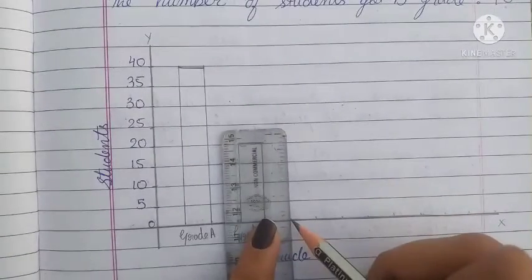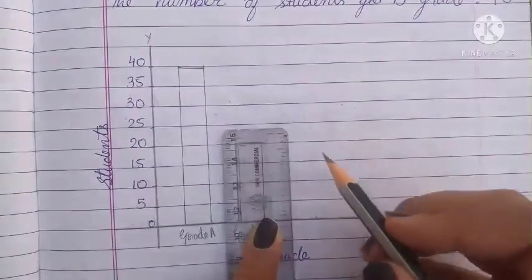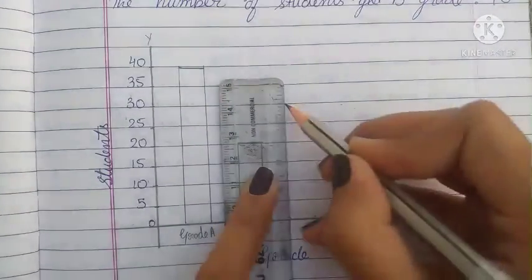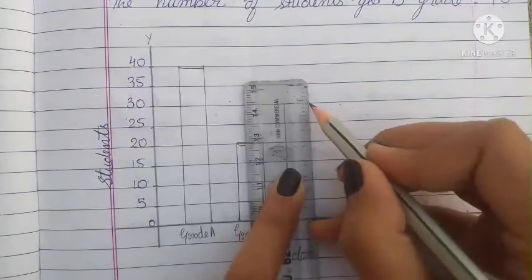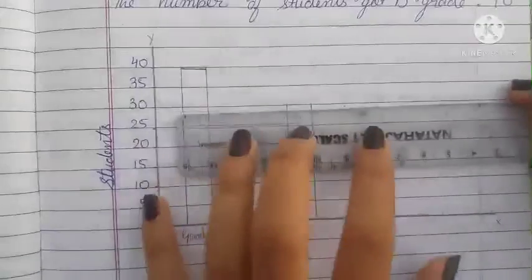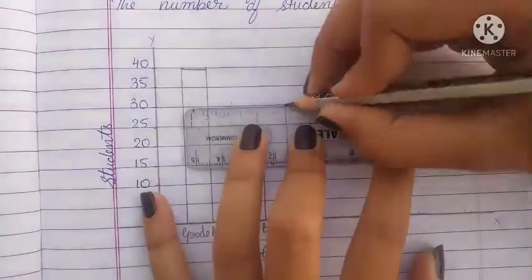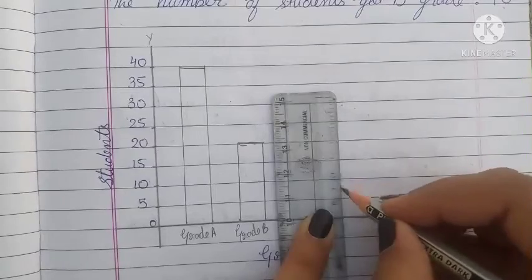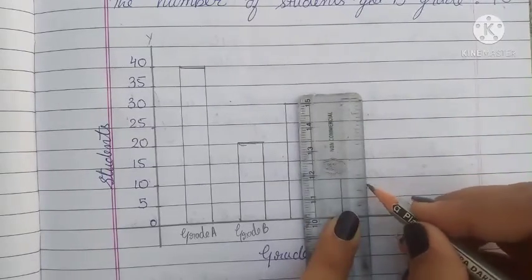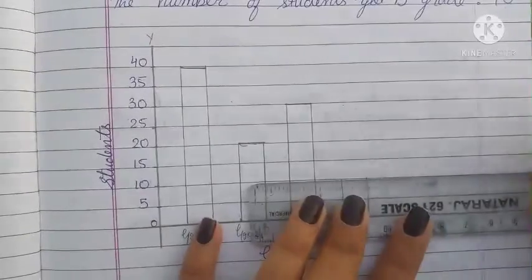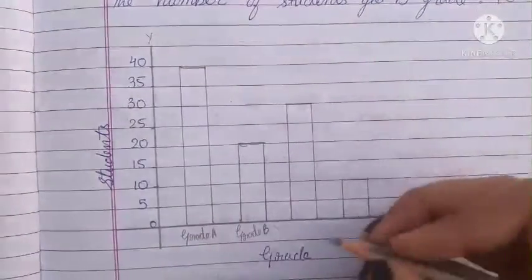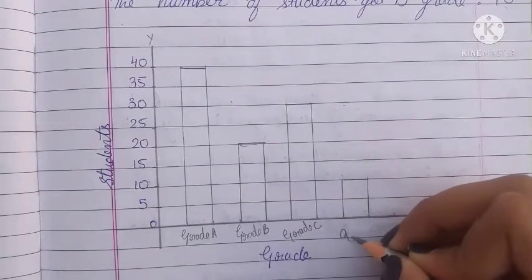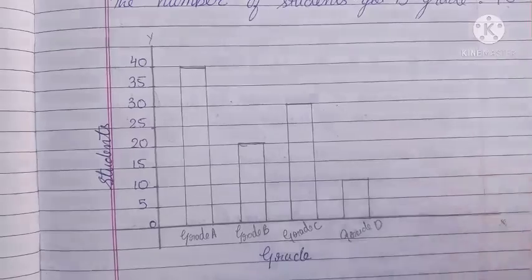Next is grade C. Grade C — how many students? 30 students. We will draw 30 students here. Then grade D — grade D had 10 students, so we will draw 10 students for grade D. This is grade C and this is grade D.